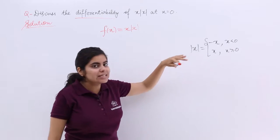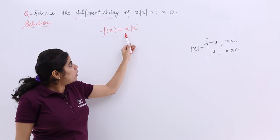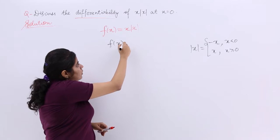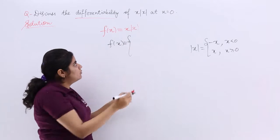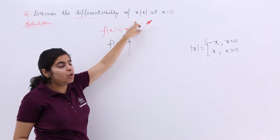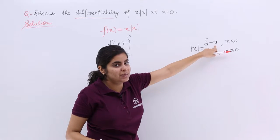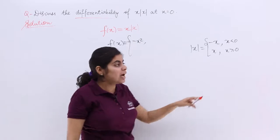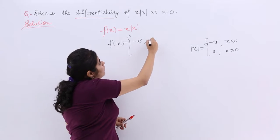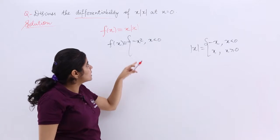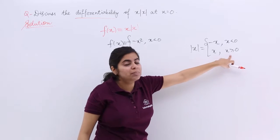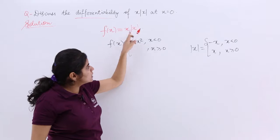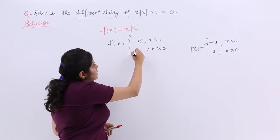If mod x is such, what about x mod x? x mod x again can have two values. Firstly, when x is multiplied by mod x, which is the above one, that means minus x, so it is minus x square. And that happens when my x is less than 0. Next, when x is multiplied by mod x, that means x greater than equal to 0 case, it is x multiplied by x, which is x square.